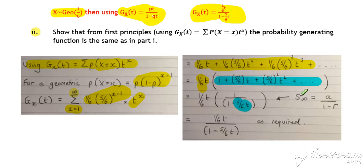So if we find the sum to infinity of that sequence, for a geometric a over 1 minus r, so 1 over 1 minus 5 sixth t. And then we can bring the 1 over 6 t back in, and we've got our result the same as in part 1.